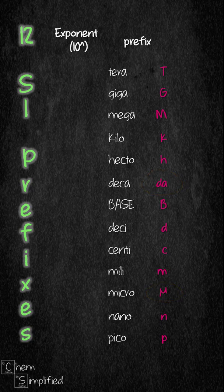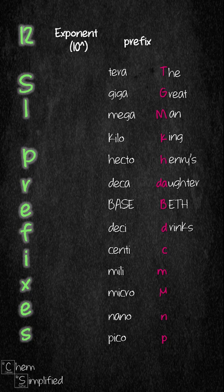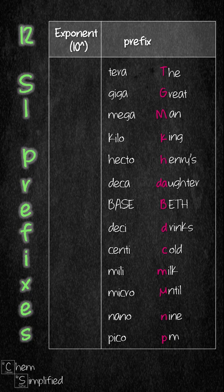I've come up with a story to help us remember all the 12 prefixes: 'The great man, King Henry's daughter Beth, drinks cold milk until 9pm.' Beth represents base, which refers to the basic unit without any exponent. Each prefix has its own exponent value. Since base has no exponent, it is 10 to the power of 0, which equals 1.